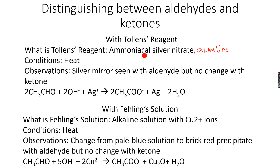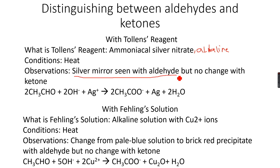When you add the carbonyl compound to the Tollens reagent and heat the mixture, you can have two different observations. One observation is a silver mirror, which happens if the carbonyl compound is an aldehyde. The other observation is no change, which happens with a ketone. So if the carbonyl compound is an aldehyde you will see a beautiful silver mirror, and if it's a ketone you will see no reaction.